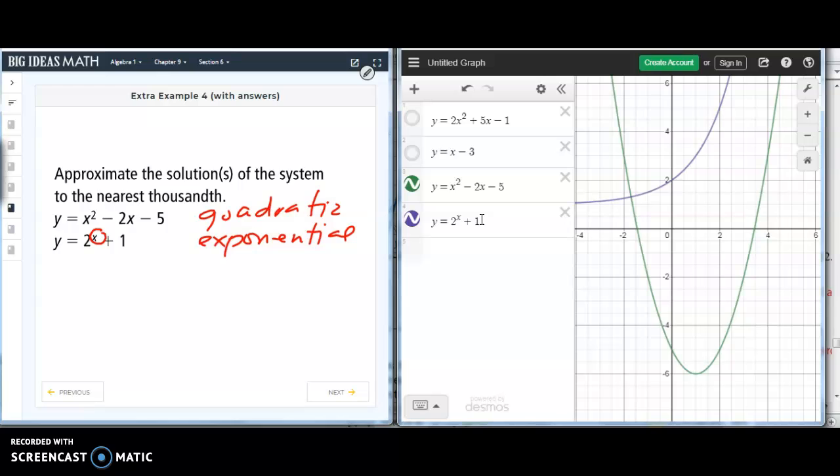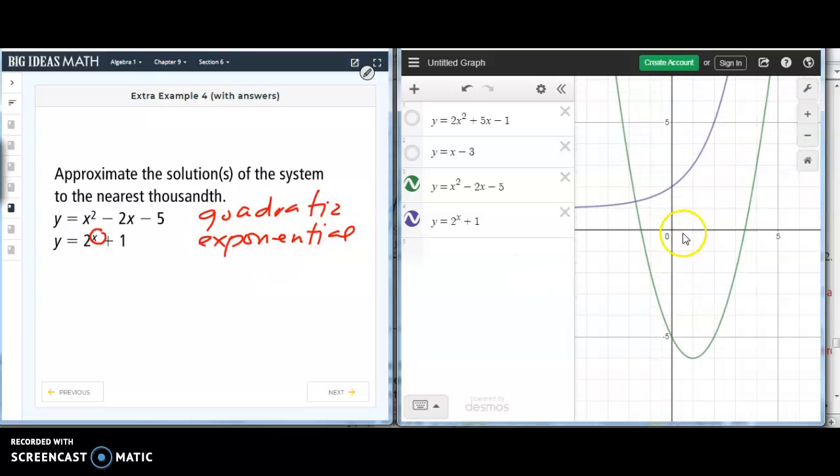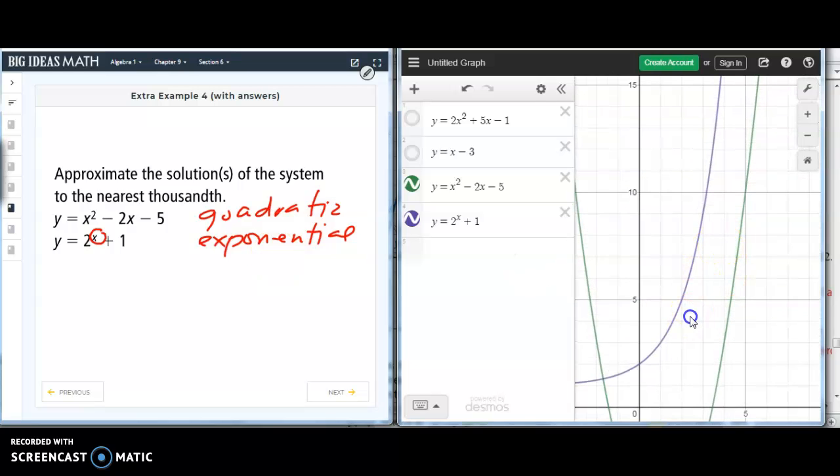The original exponential function has an initial value of 1. But the asymptote line went up 1 unit for this function here, 2 to the x plus 1. So, how many times do they intersect each other?